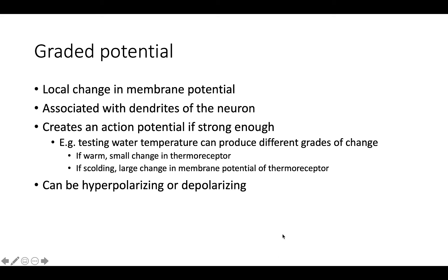A graded potential is simply a local change in the membrane potential, associated with the dendrites of a neuron. If a graded potential is strong enough, it creates an action potential. We can think of testing water temperature as an analogy: if the water is warm, a small change in the thermoreceptors of your skin will not necessarily cause you to rip your hand away — it's just warm, a mild response.